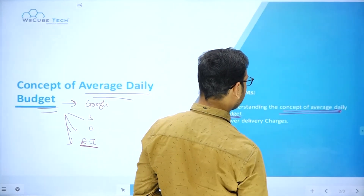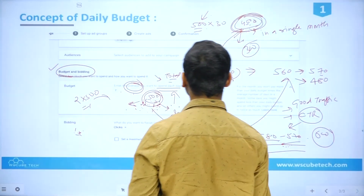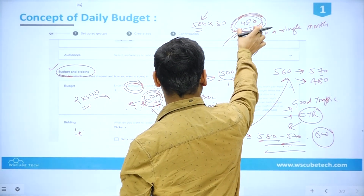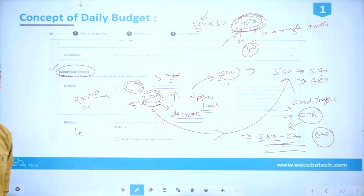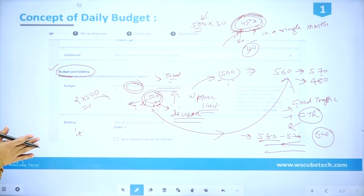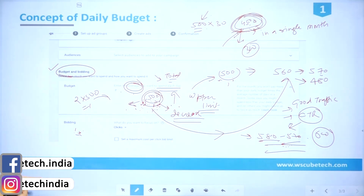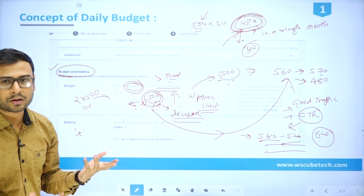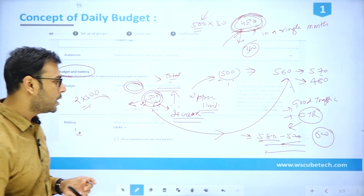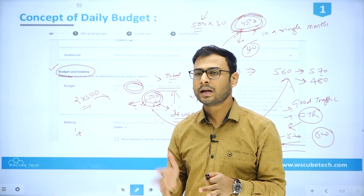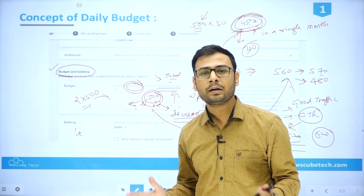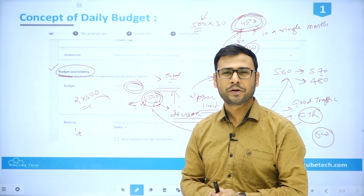There is also the concept of over-delivery charges. If you are charged above the 4,500 monthly limit, Google will refund that amount. So if you decided to spend 500 rupees per day and run your campaign for 30 days — meaning your expected monthly spend is 4,500 — and Google spends beyond that, that extra amount is refunded into your account and will not be billed. This is how average daily budget actually works. It is an average, not a fixed daily cap.